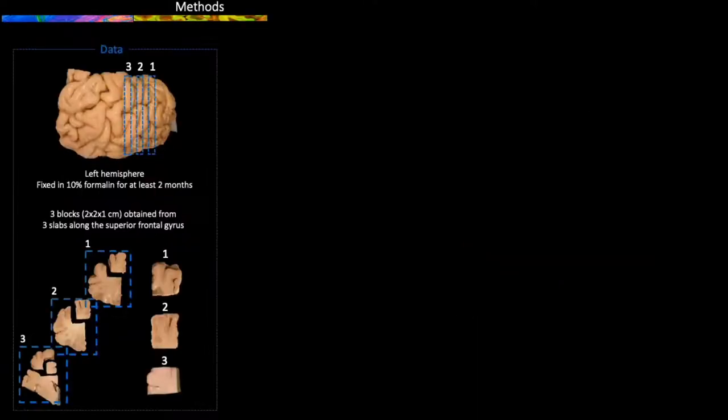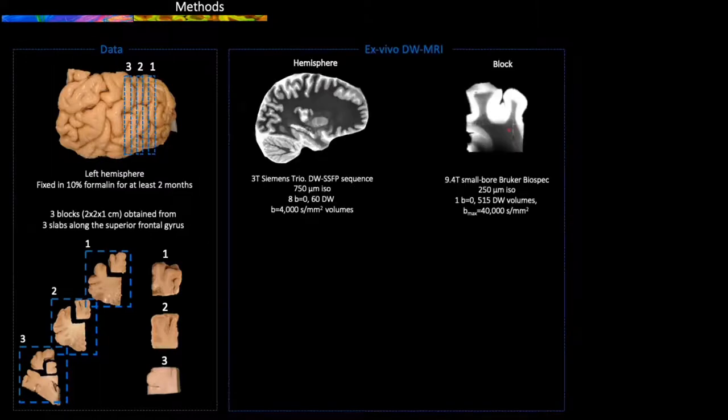From a post-mortem human brain left hemisphere, we extracted three blocks from three slabs along the length of the superior frontal gyrus. The fixed hemisphere was previously scanned at 750 microns isotropic resolution.